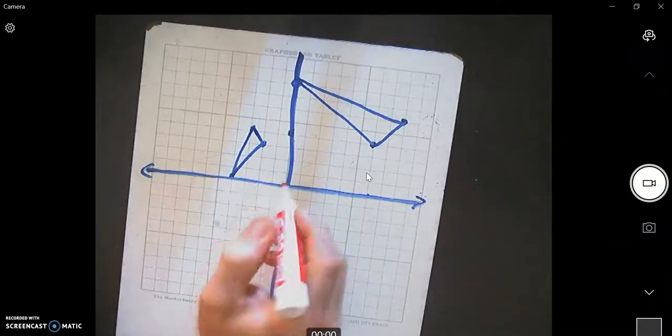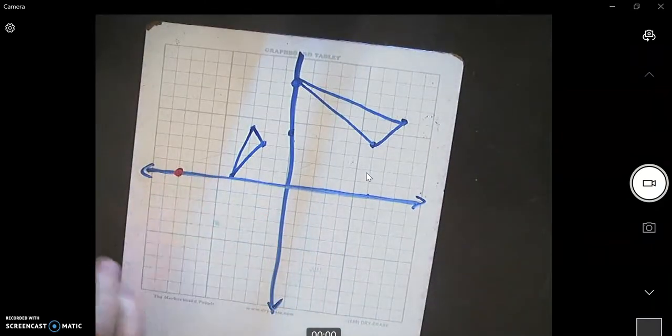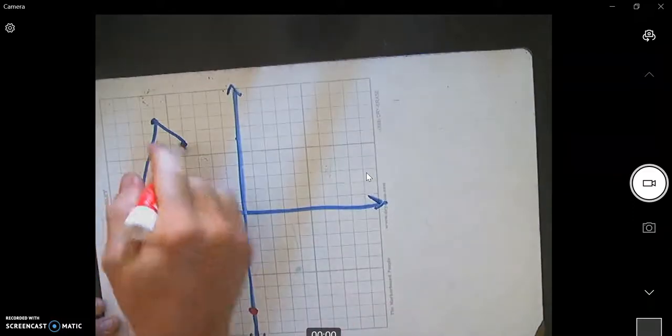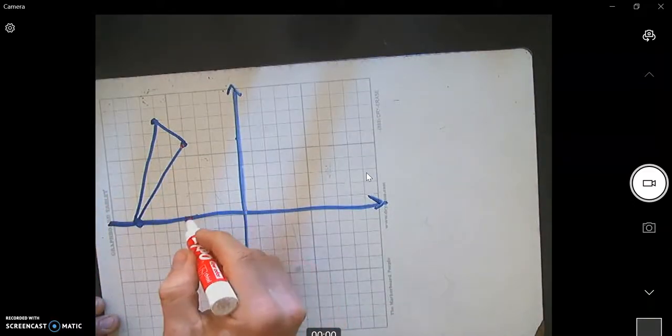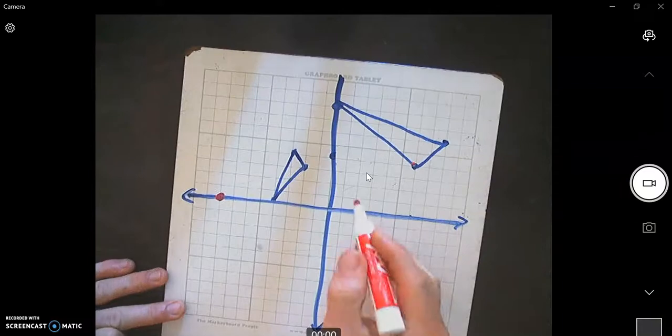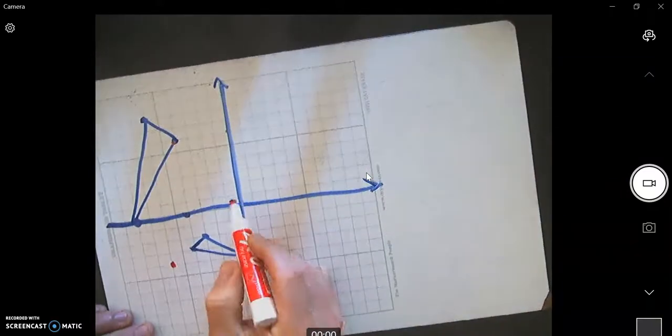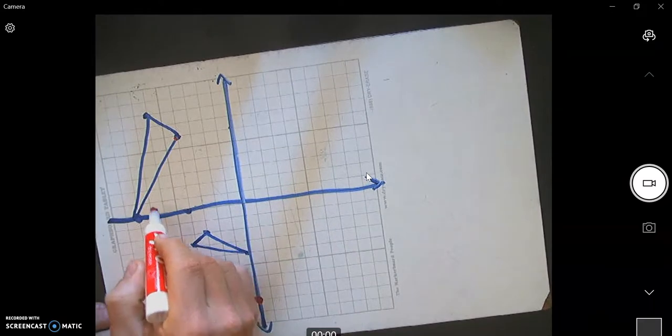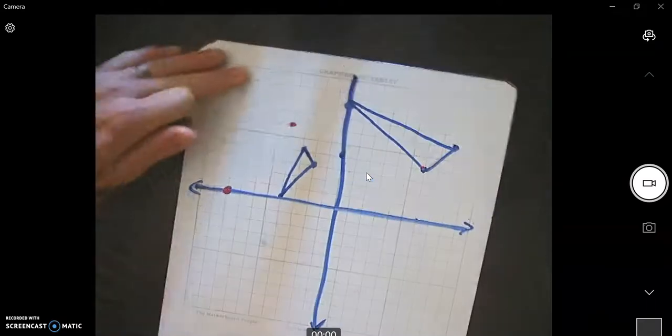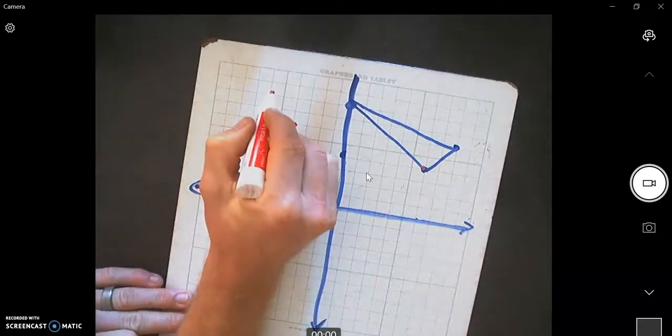So our new point is 0. So we go over 4, up 6, so over 4, up 6, and finally it looks like we go over 6, up 8, over 6, up 8.